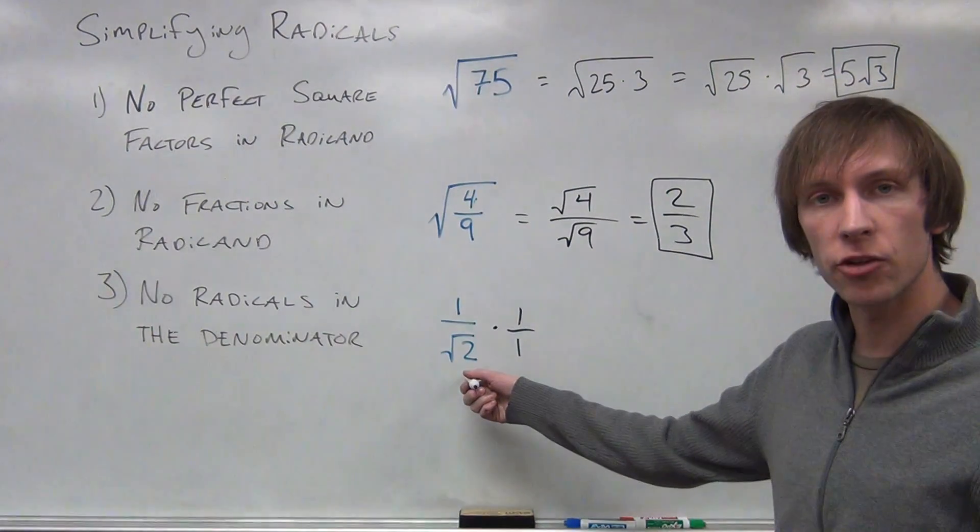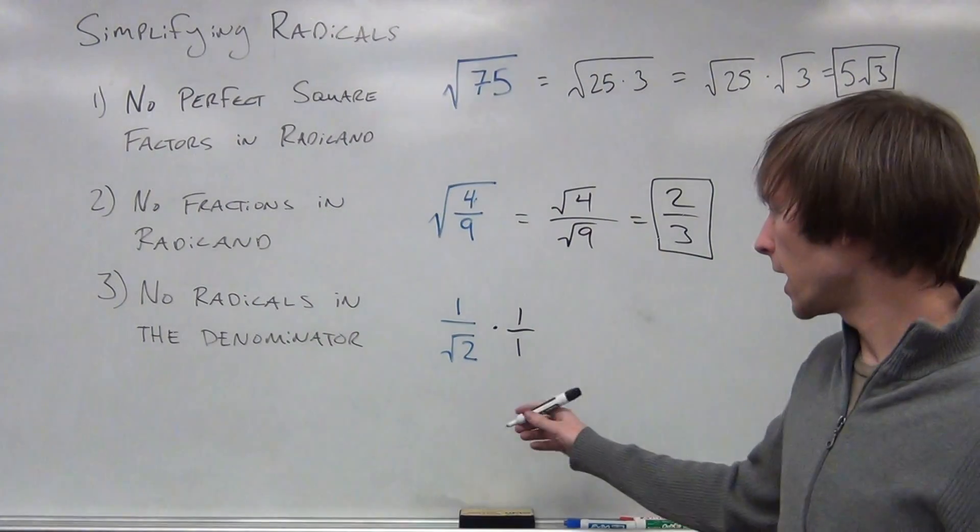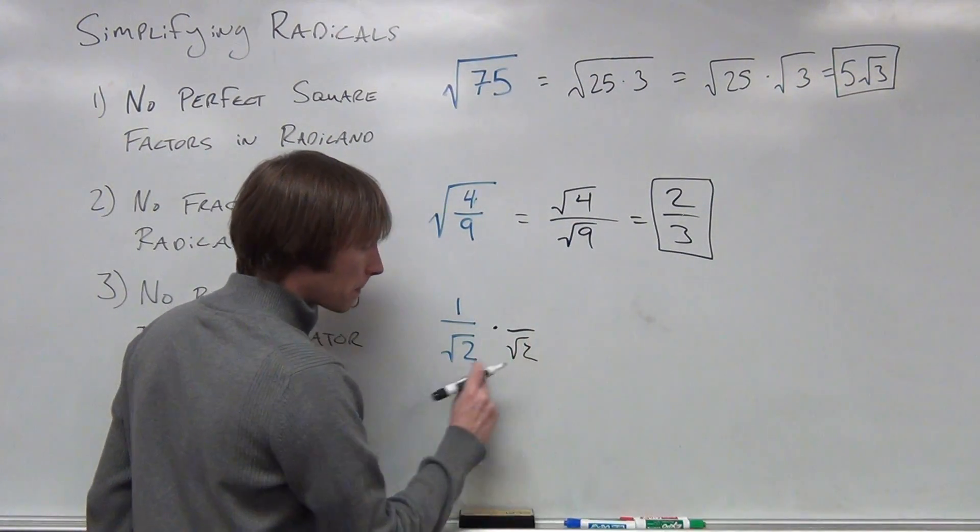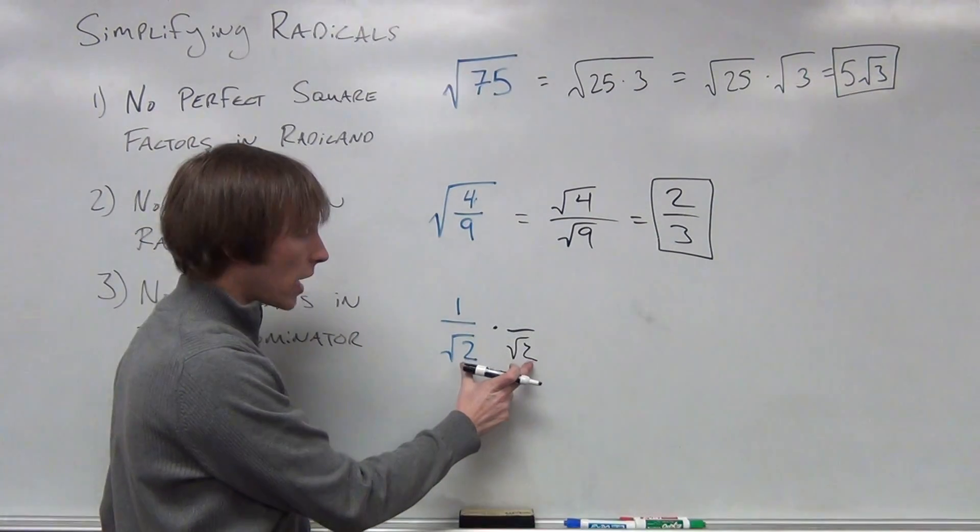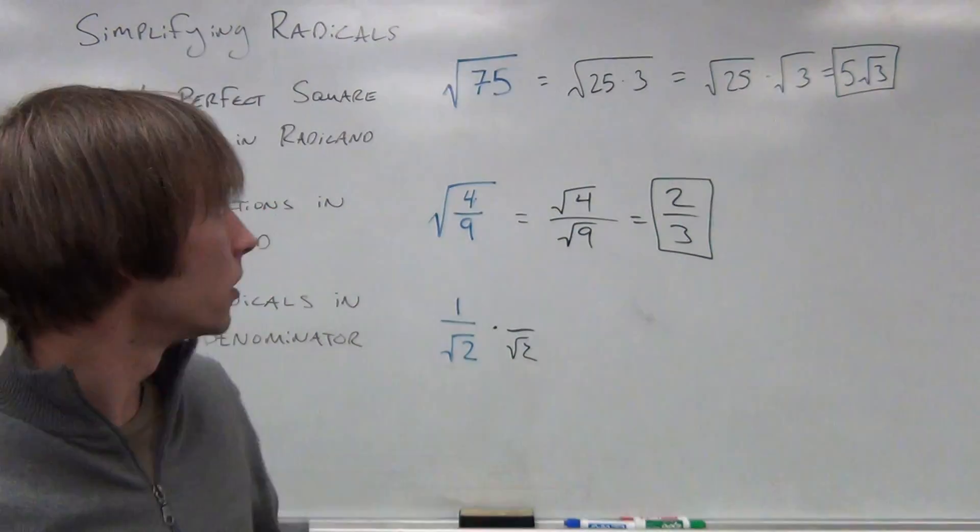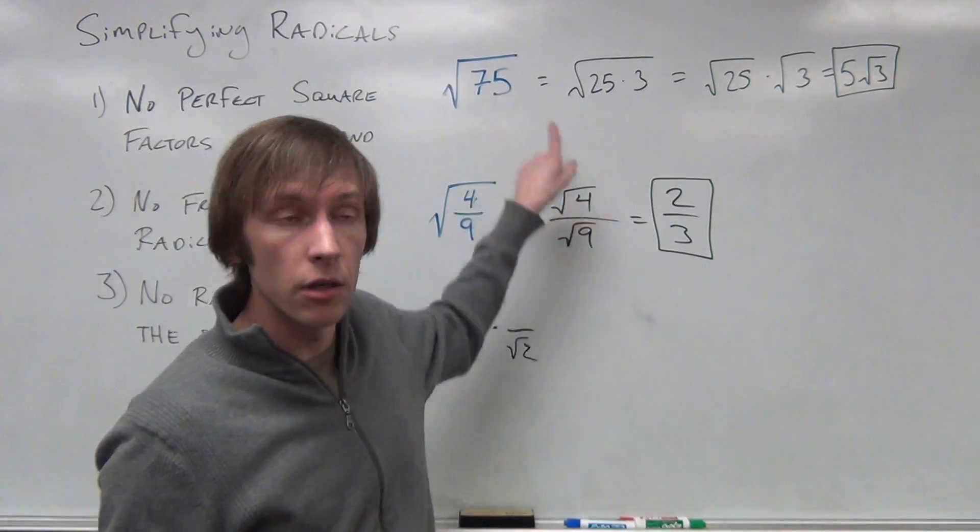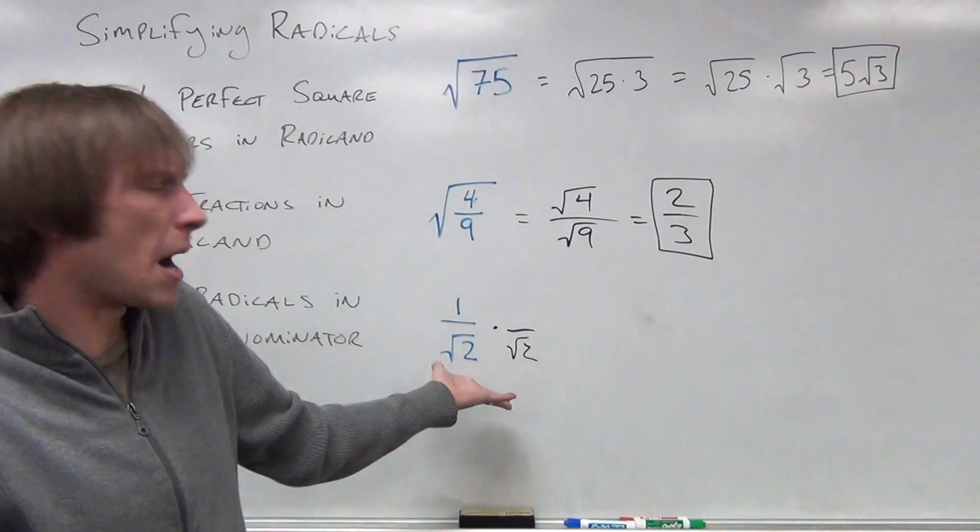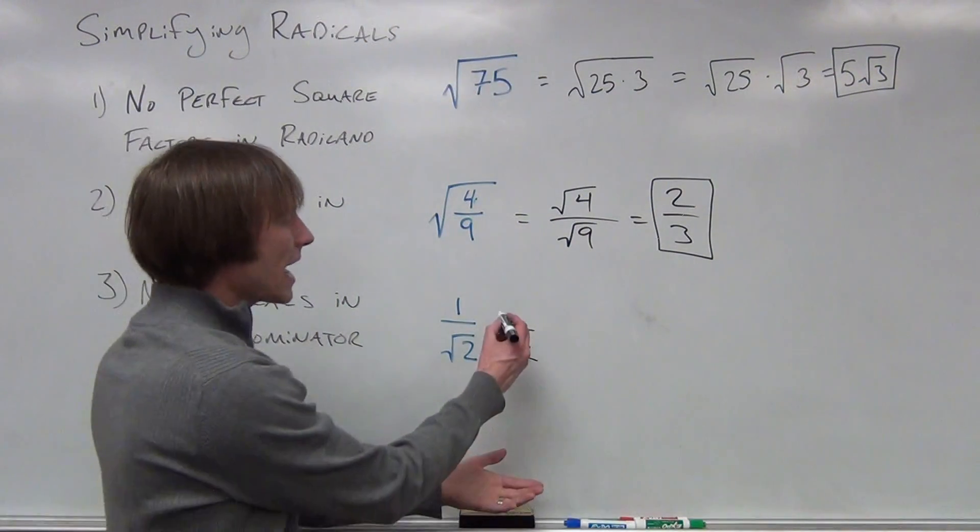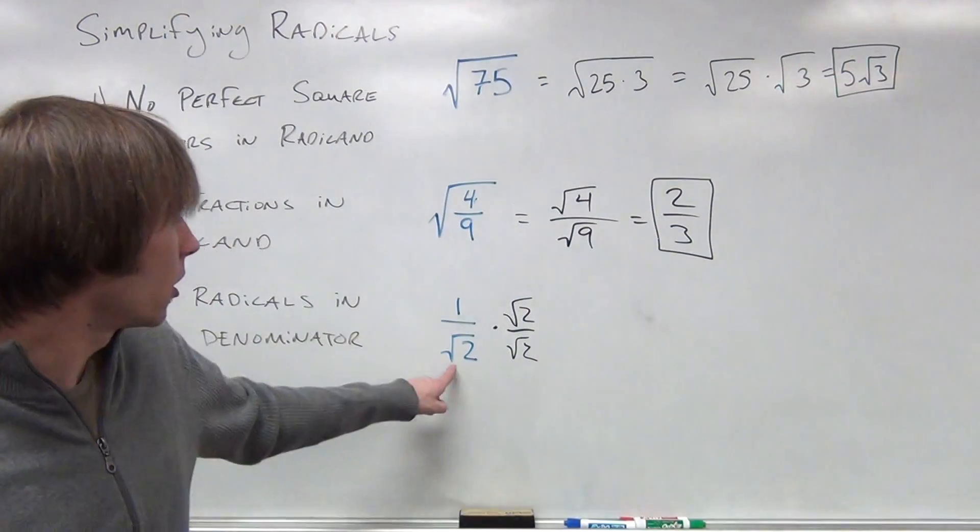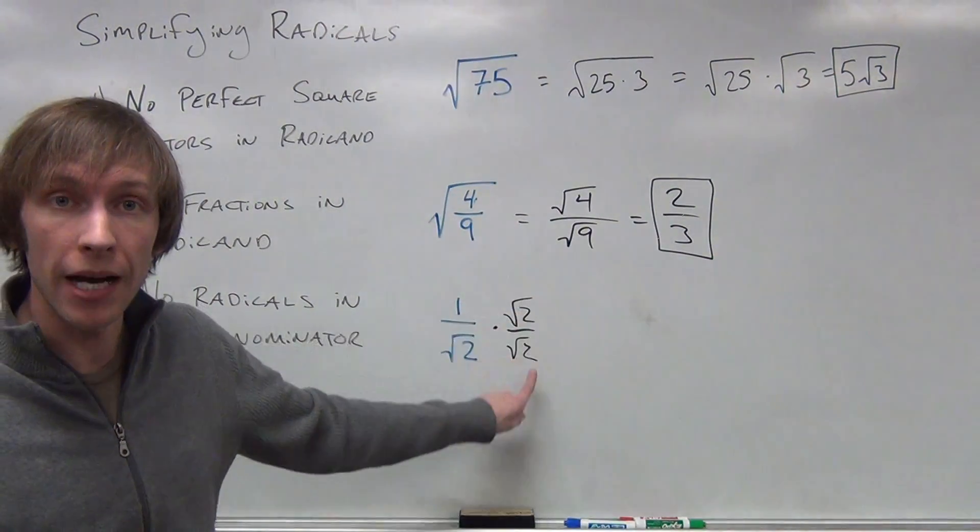Well, if I multiply the square root of 2 by the square root of 2, that is going to give me a rational number because the square root of 2 times the square root of 2 is the square root of 4 using this property. That means I have a rational number in my denominator. But I can't just multiply the denominator by the square root of 2.